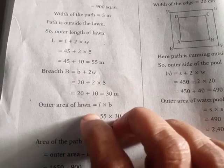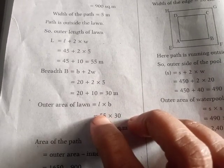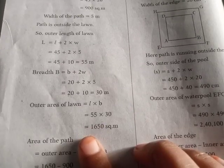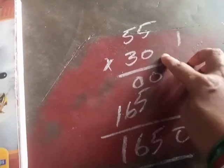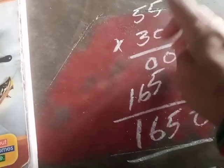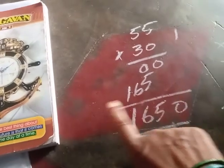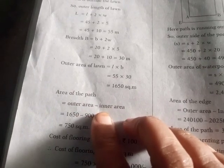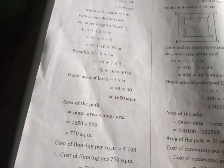Outer area equals L into B, which is equal to 55 into 30. Calculating: 55 into 30 is equal to 1650 square meters.